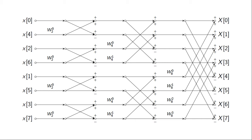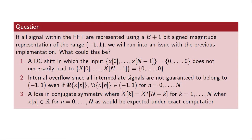If you were to implement the FFT algorithm in fixed-point using these schematics, that would lead to a particular problem. Would it be a DC shift or bias — where even if you input the vector of all zeros you wouldn't get all zeros at the output? Or would it be internal overflow — meaning that even if the real and imaginary parts of the input are known to be in the range minus one to one, internal signals could fall outside that range?